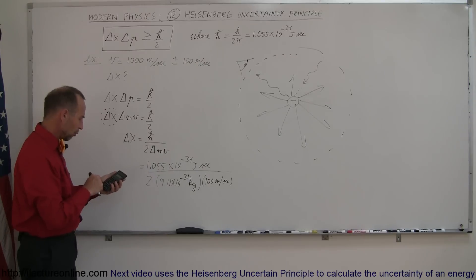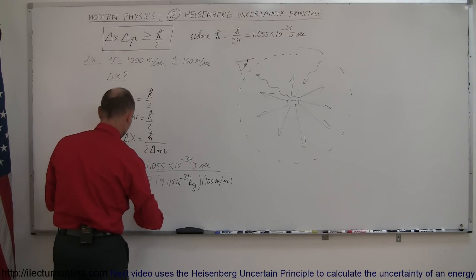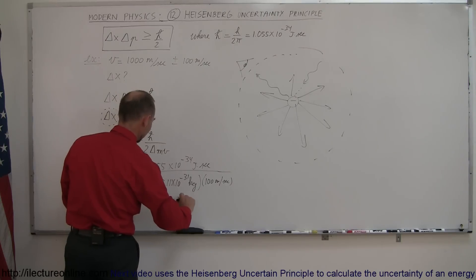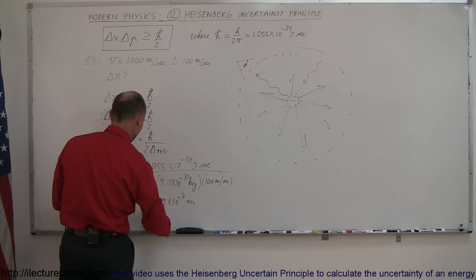So we have 1.055 e to the 34 minus, divided by 2, divided by 9.11 e to the 31 minus, and divide by 100. And what we get here is, we get this is equal to 5.79 times 10 to the minus 7 meters, which would be 579 nanometers.